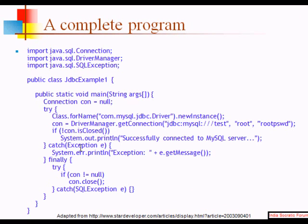Here is an example of a complete program — please pause the video and take a look. Public class JDBCExample1. In main, try: create a new instance with the driver, then do DriverManager.getConnection() and assign it to 'con'. If the connection is not closed, it is fully connected. Catch the exception. Finally, close it. After connection is established you can do SELECT, UPDATE, and all those operations to the database. Then finally close the connection.